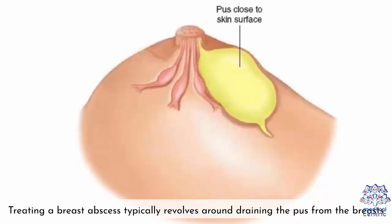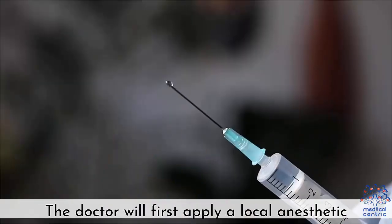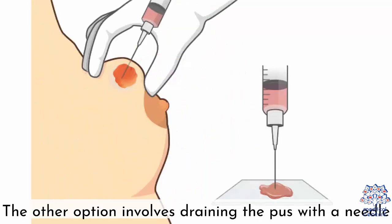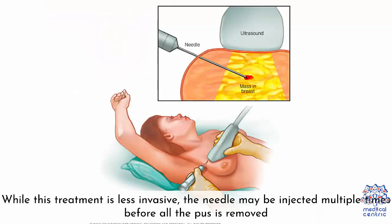Treating a breast abscess typically revolves around draining the pus from the breasts. The pus can be drained by making a small incision in the pus-filled region. The other option involves draining the pus with a needle. While this treatment is less invasive, the needle may be injected multiple times before all the pus is removed.